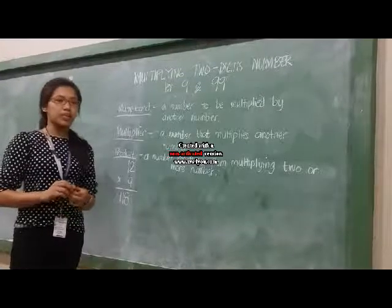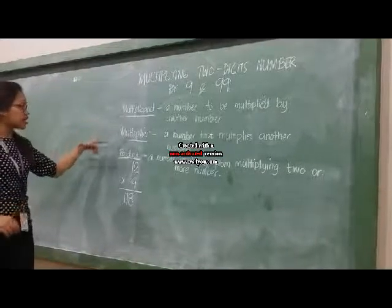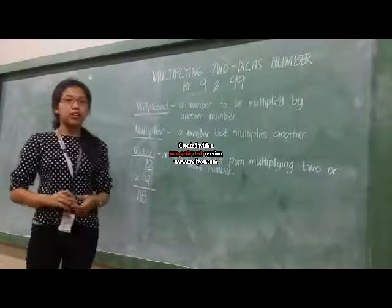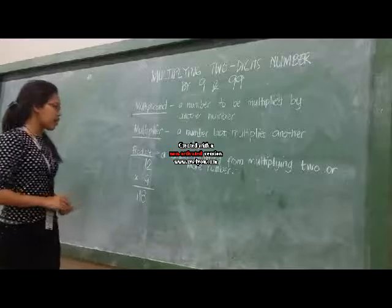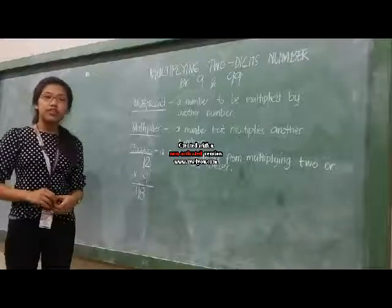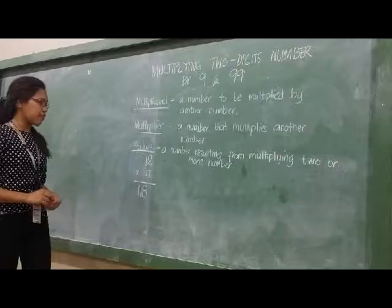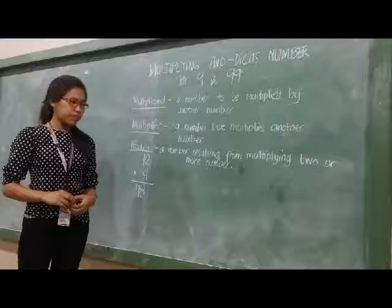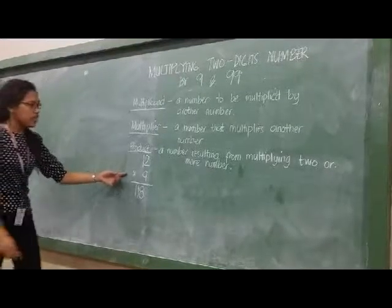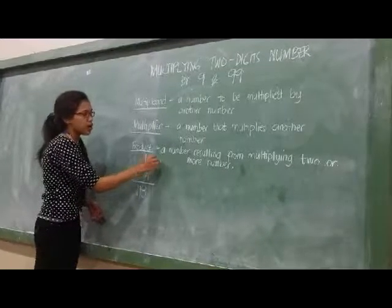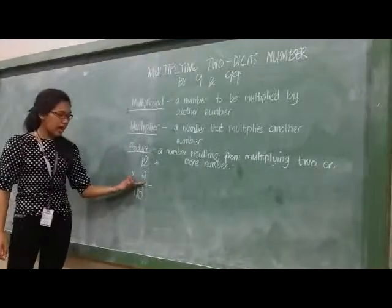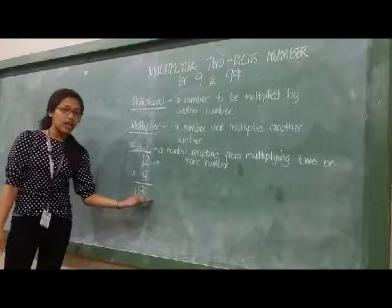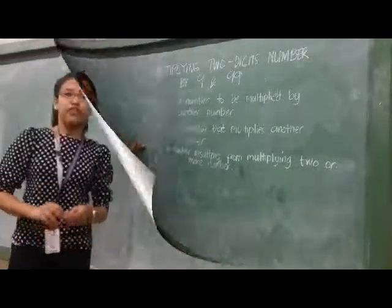But first, let us remember these definitions of terms. First, multiplication — a number to be multiplied by another number. Multiplier — a number that multiplies another number. And lastly, product — a number resulting from multiplying 2 or more numbers. Just like this one: 12 is our multiplicand, 9 is our multiplier, and the result is our product.